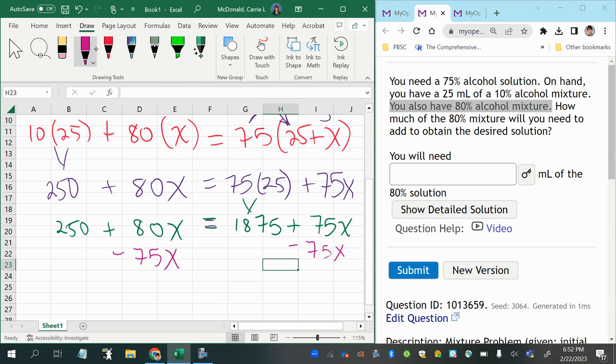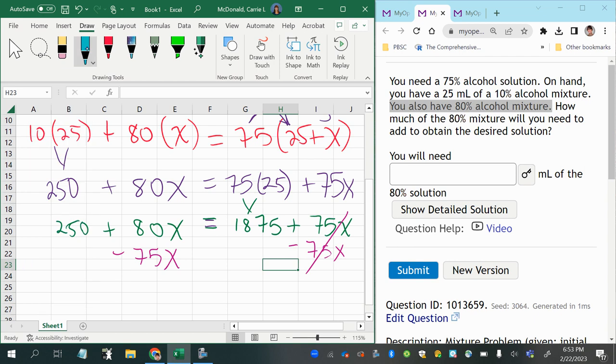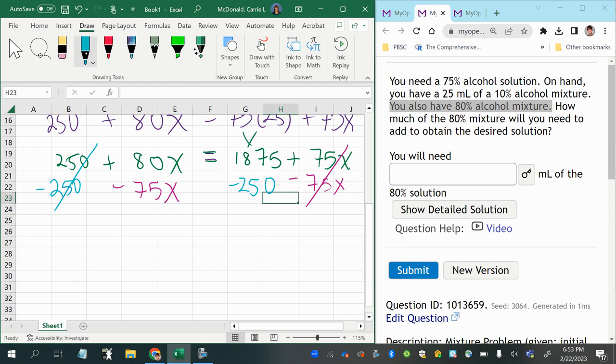Keep everything balanced with an equation. And then I will also go in and subtract 250 from each side so that it cancels out on the left. Then combining like terms in the next line.